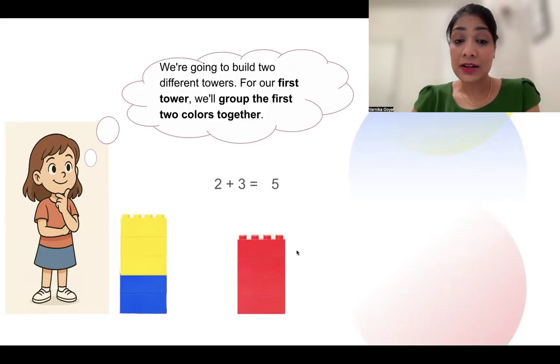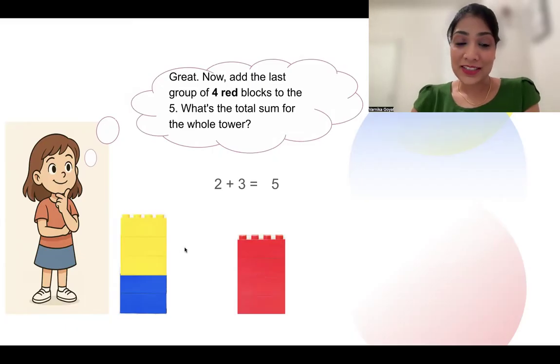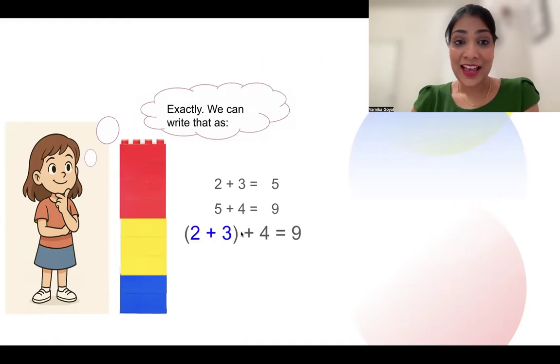Now let's stack our red blocks on top of it. What's the total sum of the whole tower? 5 + 4? 9. Exactly. We can write that as (2 + 3) which was our first group, added with 4. That gives us sum 9.